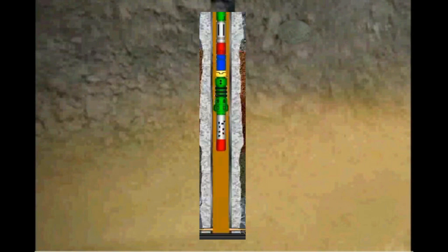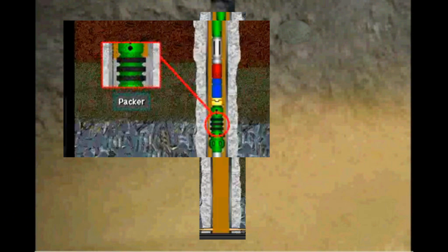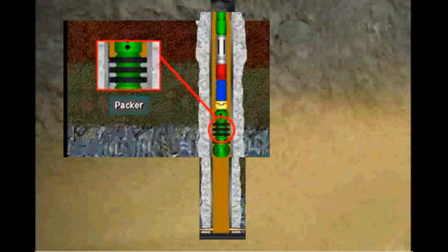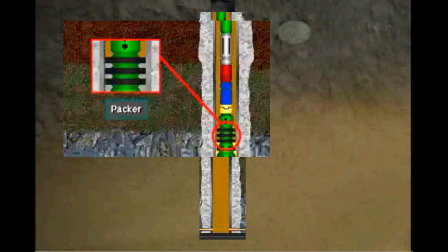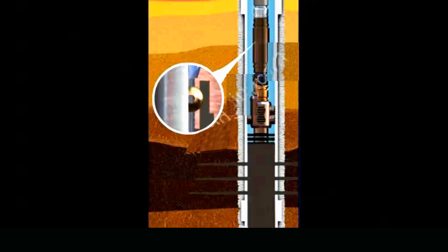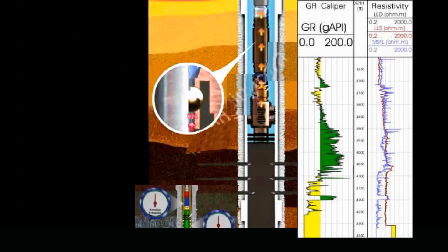The DST is lowered to the zone of interest. The packer, or packers, are set. Then the first valve is opened to expose the pressure recorder to the reservoir where it records the formation pressure. Then the second valve is opened to allow the formation fluid to flow to the surface. Its flow rate is measured along with the saturation percentages.